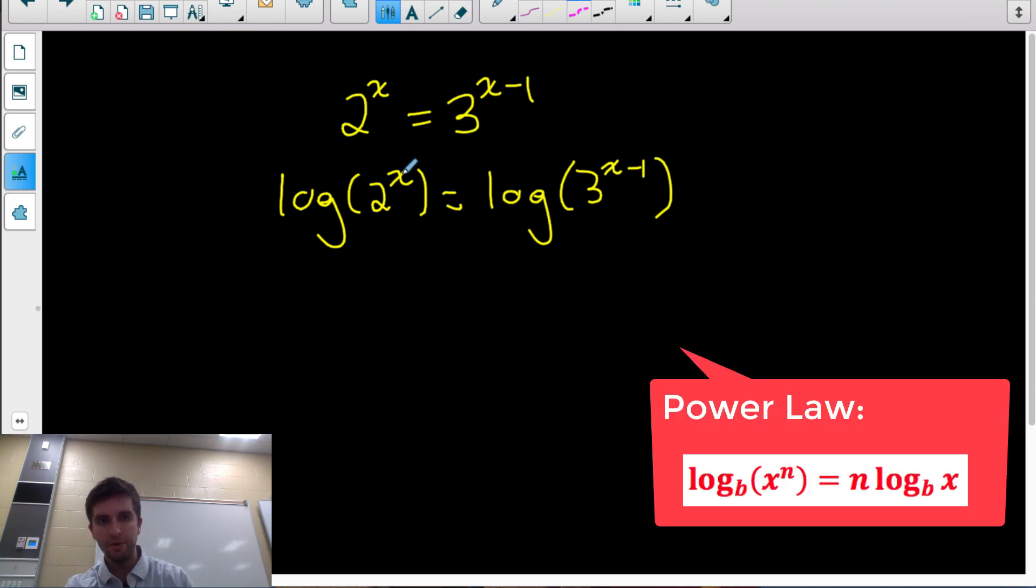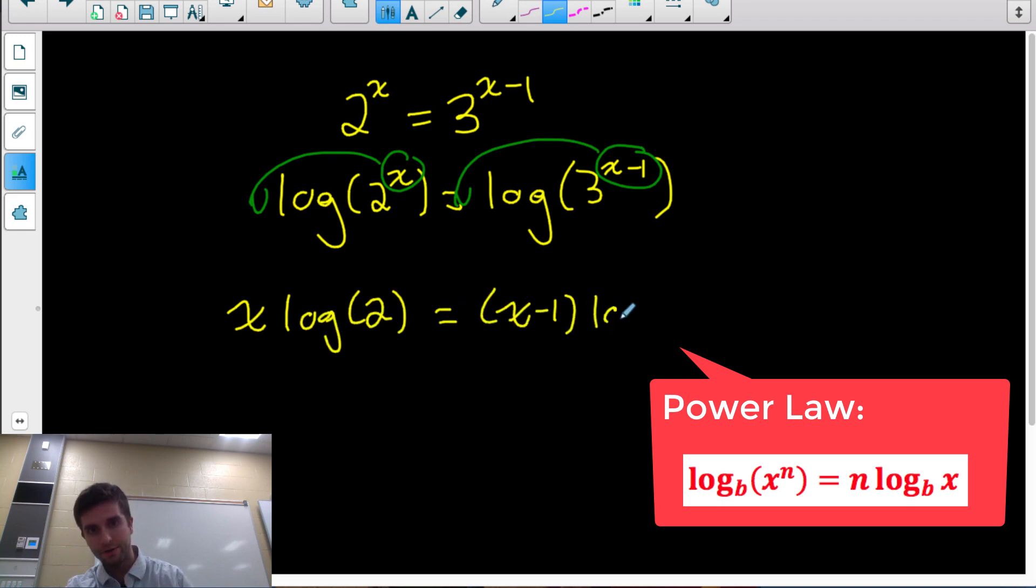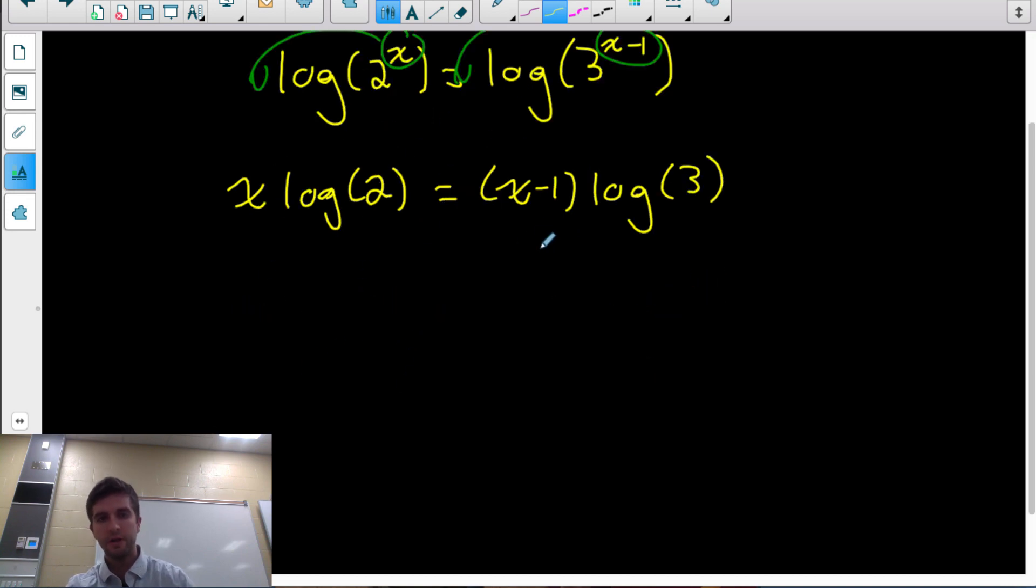Now we'll use the power rule. The power rule tells us we're allowed to take the exponent of the argument and write it as the coefficient of the log. So I have x log 2 equals (x minus 1) log 3. And if you don't know these rules, go back and watch my previous video first. Okay, so now what I'm going to do is distribute my log 3 to the x and the negative 1. So I'm going to have x log 3 minus log 3 when I do my distributing. So x log 2 equals x log 3 minus log 3.